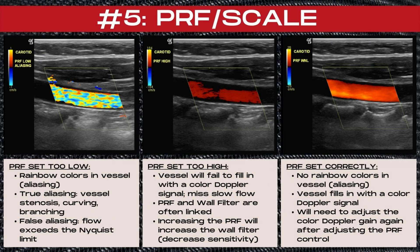The next step in our color Doppler optimization checklist is the PRF or scale control. Doppler has a limit, and past this limit the ultrasound machine can no longer measure the velocity of flow because it is too high — this is known as the Nyquist limit. The Nyquist limit is the maximum limit of the Doppler shift that can be measured and displayed by the ultrasound machine. Above this Nyquist limit, aliasing occurs. The Nyquist limit is half of the PRF. Aliasing is flow that changes speed and direction either due to vessel dynamics or improper color settings, and it appears as multiple colors displayed within a structure or vessel on color Doppler. Artifactual velocities occur when the velocity of flow has exceeded the Nyquist limit.